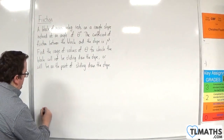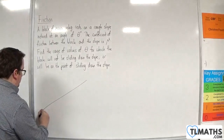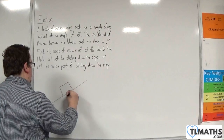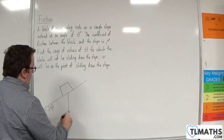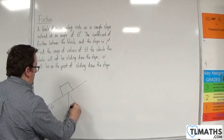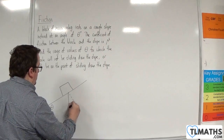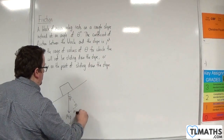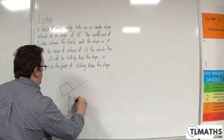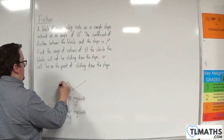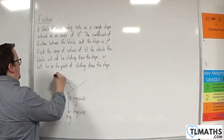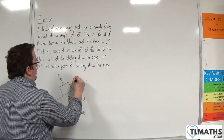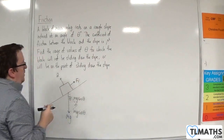Let's draw a diagram so we can visualise what's going on. Here's my slope, here's my angle, here's my block, and it has a weight of mg. Let's complete that triangle — that angle is going to be theta. This is the opposite side, so this is mg sine theta, and this is the adjacent side, so mg cosine theta. It's in contact with the surface, so there'll be a normal reaction R. It's trying to slip down the slope, so the friction will act up the slope and parallel to it.